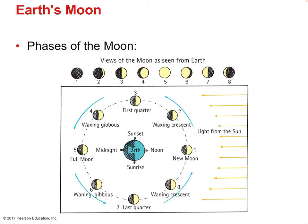The moon has phases. Starting from the full moon and moving counterclockwise, the phases are: waning gibbous, last quarter, waning crescent, new moon, waxing crescent, first quarter, waxing gibbous, and returning to the full moon. That's the full cycle. Waxing means growing — a waxing crescent is becoming larger each day. Waning means shrinking. Between a quarter and a full moon is a gibbous moon.